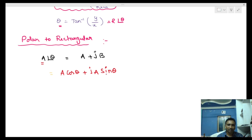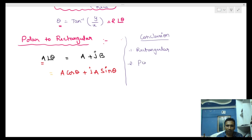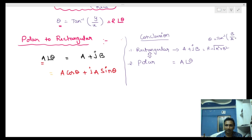So thinking about polar and rectangular forms: there are basically two forms — rectangular and polar. Rectangular form is written as a plus j·b. Polar form is written as a at an angle theta. The rectangular-to-polar formula is R equals square root of a-squared plus b-squared, and theta equals tan inverse of imaginary by real. The polar-to-rectangular formula gives a·cos(theta) plus j·a·sin(theta). These conversions are now covered and examples will be solved in the next class.